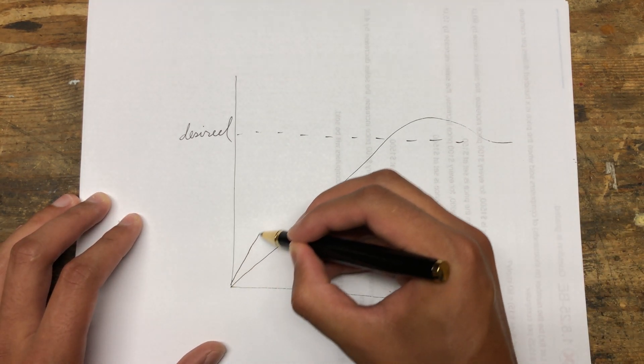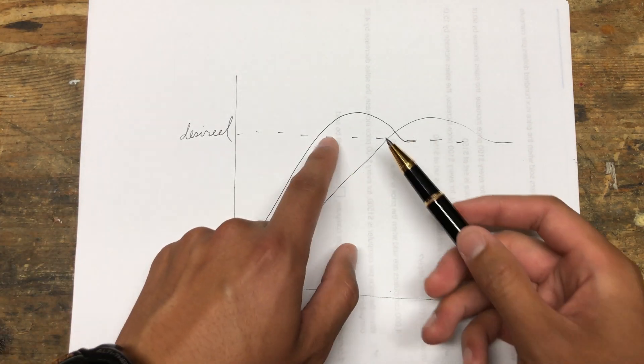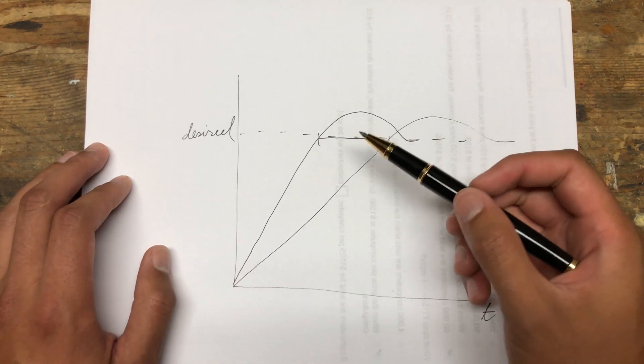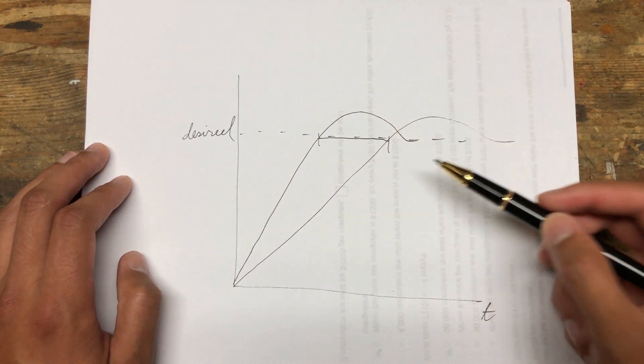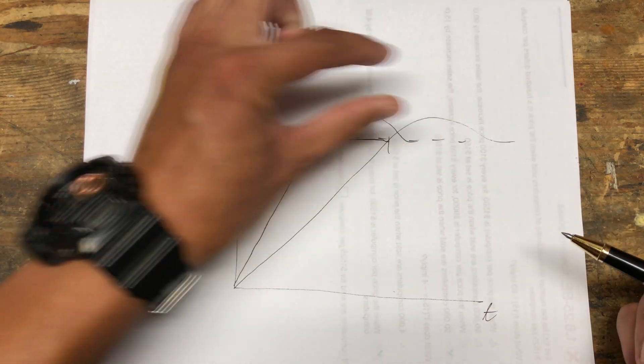Maybe that would look something like this. Everything happens a little bit faster. Your response time improves by this amount of time, but you can see the general response characteristic stays the same. For example, our overshoot is the same height.